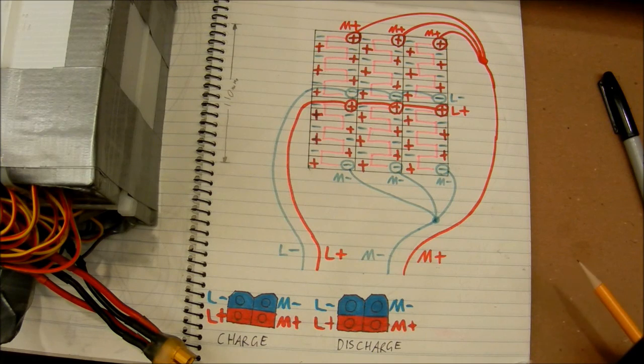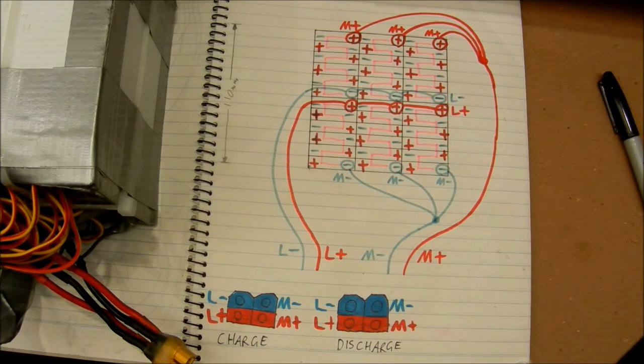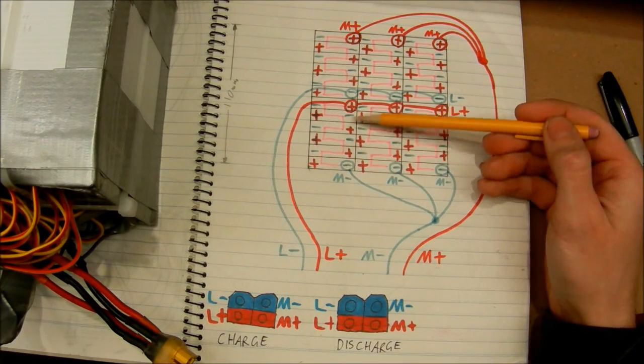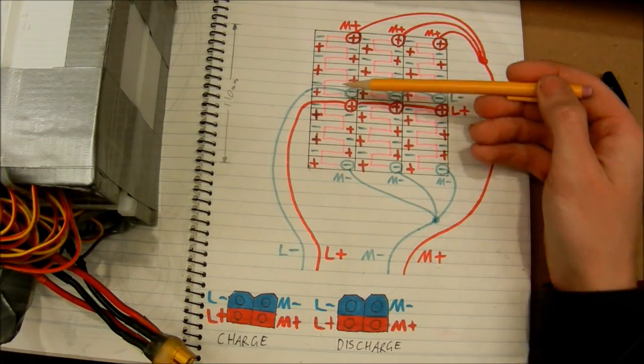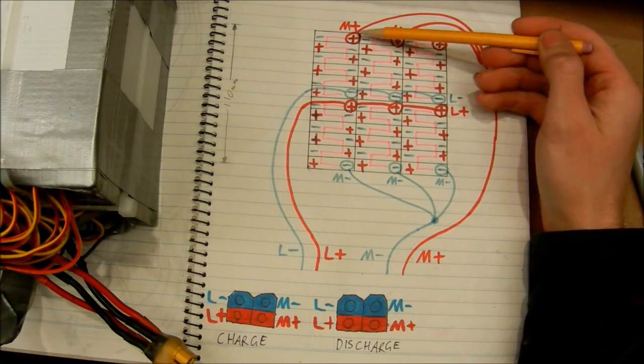Now, my charger can only charge 24 volts, or 6 cells maximum. That's the maximum voltage it can charge. But in order to be able to charge that, I have to split these cells after 6 cells, and then parallel the negative to the negative again.